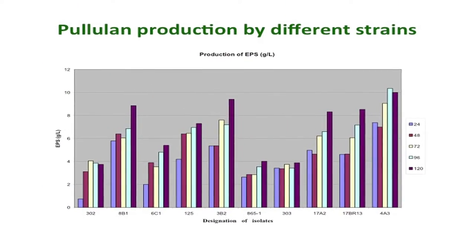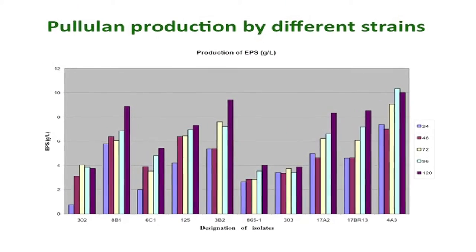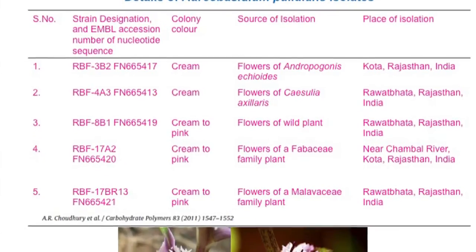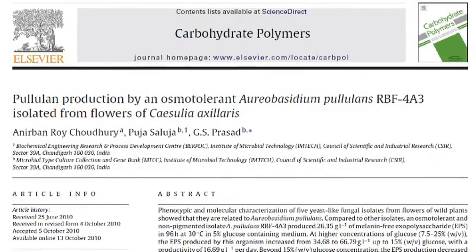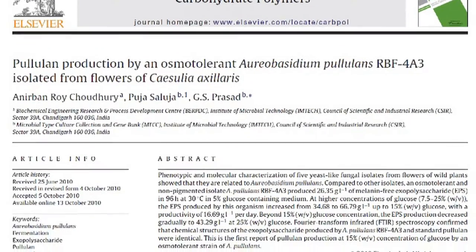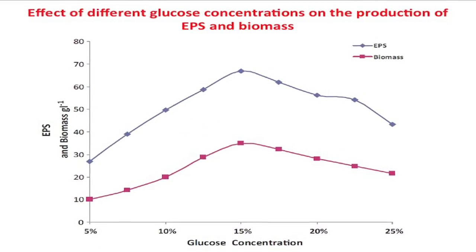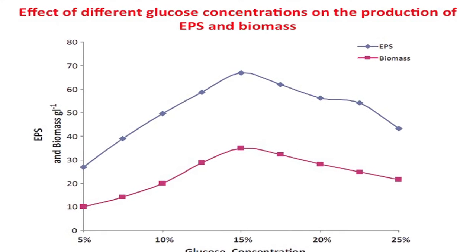We have isolated several yeasts as part of our project and found that some of them belong to the genus Aureobasidium pullulans. When we have screened them for the production of pullulan, we found about 10 of them producing very good amounts of pullulan.